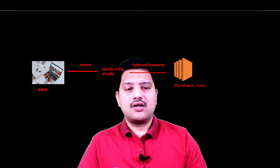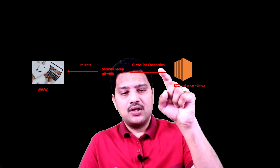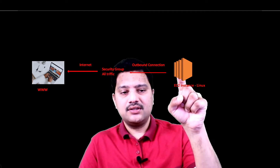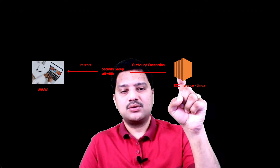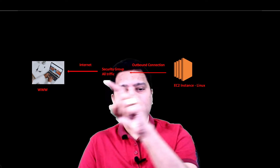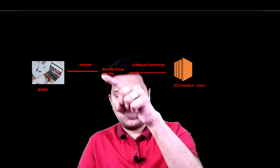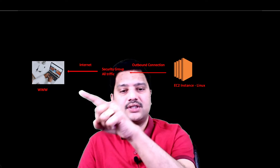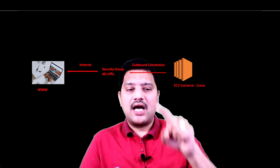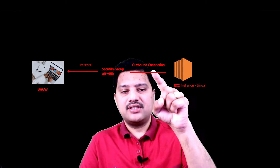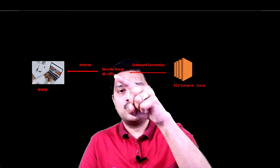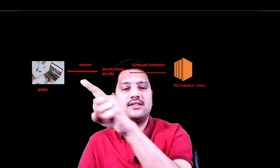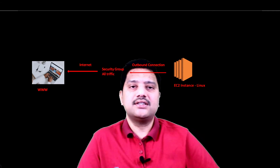Now let us talk about the outbound connection. If you are initiating a connection at the EC2 instance to talk to the internet, the security group should allow all traffic for that. You have an outbound rule specified in the security group that it can talk to the internet, then it allows all the traffic.